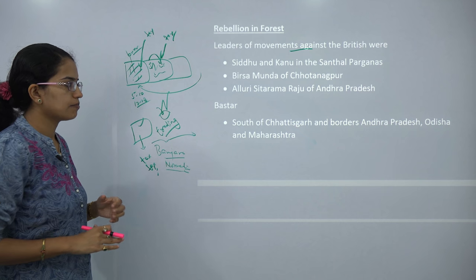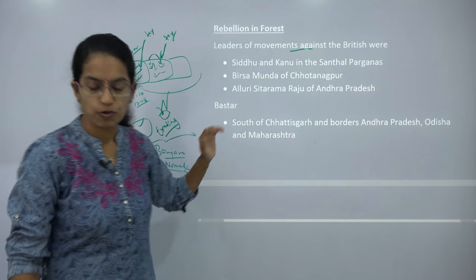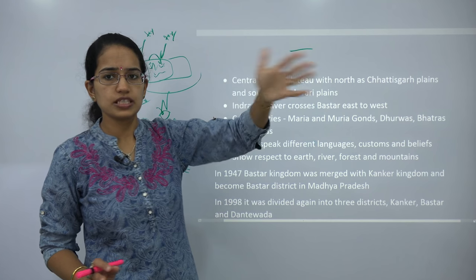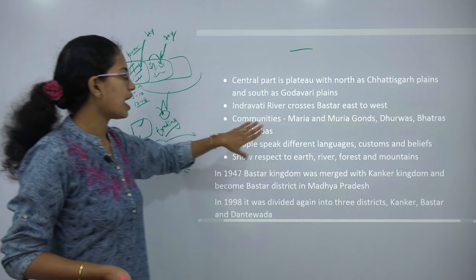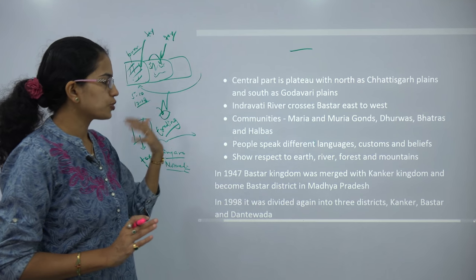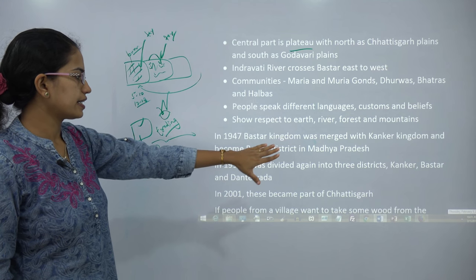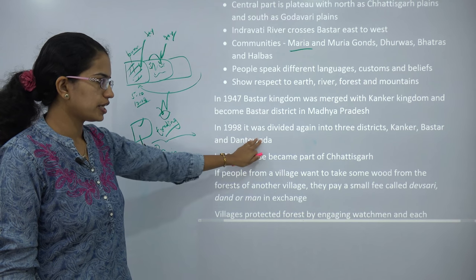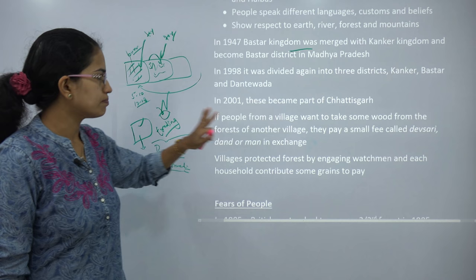Bastar is one good example — south of Chhattisgarh, which borders Andhra Pradesh, Odisha, and Maharashtra. In the Bastar region, the Indravati River crosses it from east to west, and there were numerous communities like Muriyam, Gonds, Durvas, Batras, and Halvas living there, with their own language, cultures, and customs. They showed respect to earth and natural surroundings. The Bastar kingdom was later merged with Kanker kingdom and became the Bastar district of Madhya Pradesh, then divided into three districts of Kanker, Bastar, and Dantewada, and in 2001 all three became part of Chhattisgarh.